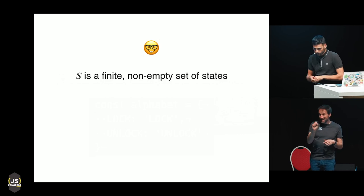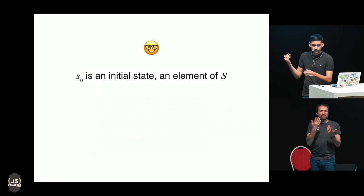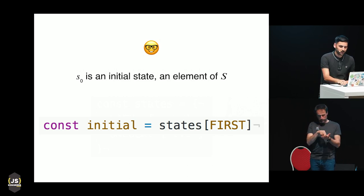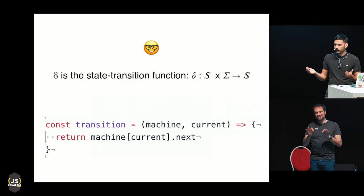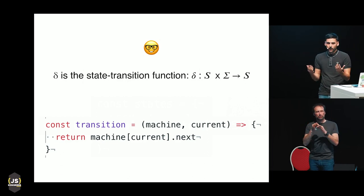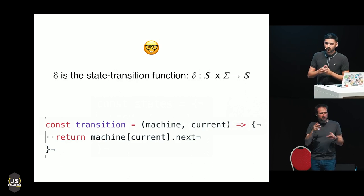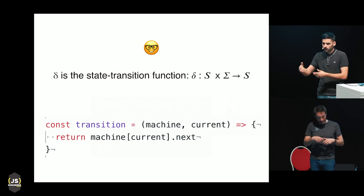S is a finite, non-empty set of states — it could be something like another object. The keys match with the alphabet we saw before. What's inside each state is not important right now, and actually it can be defined by you as the developer depending on your needs. The initial state — S sub zero — the only condition is it has to be part of our states set. And delta is the transducer — the technical name — but it's basically a transition function. So if I have a machine and I know the current state, I have to be able to get the next state. If your finite state machine is not based on events, it's always from A to B, from B to A — then you don't need actions.